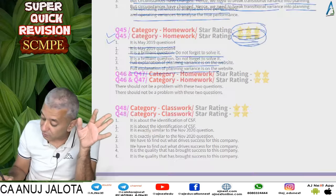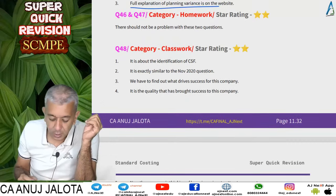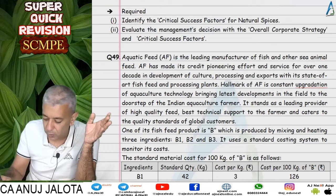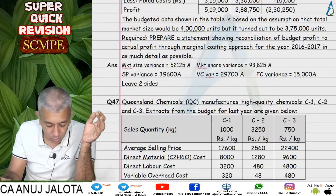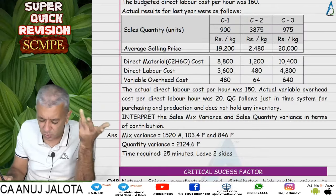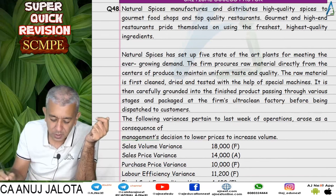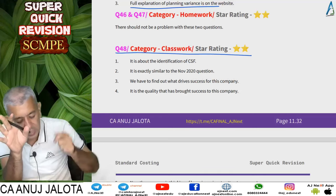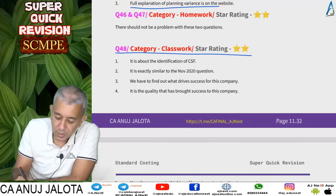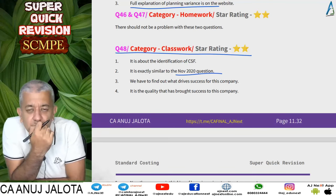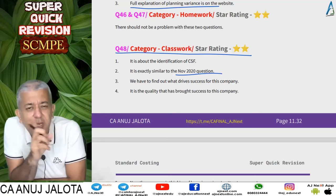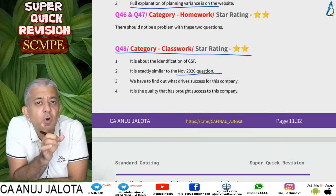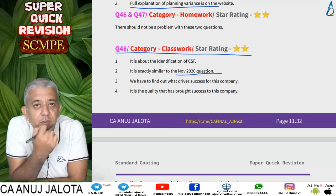Question 45 is a three-star question and can be asked in future exams, so be careful. Questions 46 and 47 are not very tough — you should be able to manage them without much difficulty. If you don't get the answer, you can refer to the resources. Question 48 is important — a similar question was asked in November 2020. It is about identifying the Critical Success Factor (CSF). We will also touch upon CSF when we study the Balanced Scorecard.